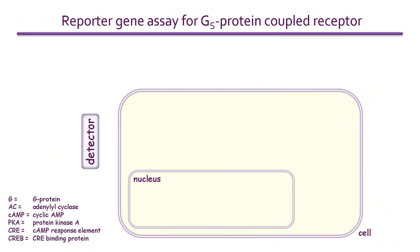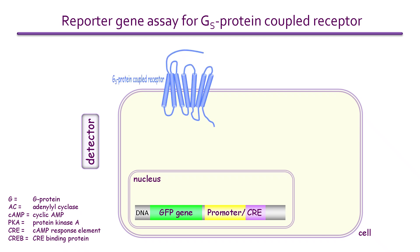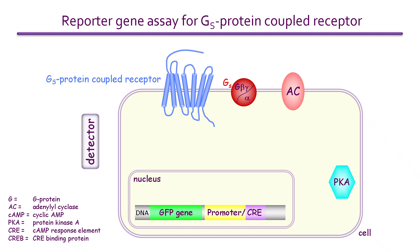Let's finish with an example of how a reporter gene might be used in pharmacology or drug discovery. A cell line is transfected with a DNA plasmid engineered to contain the GFP gene and a cyclic AMP-responsive promoter, such as the CRE cyclic AMP response element. It's designed so that cyclic AMP signalling to CRE drives the expression of GFP. The cells also express everything necessary for cyclic AMP signalling.